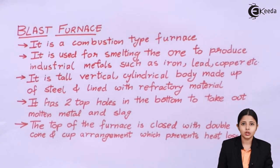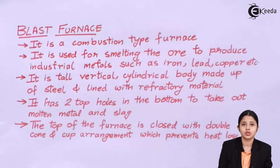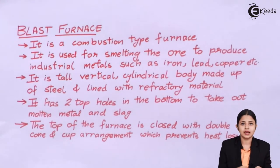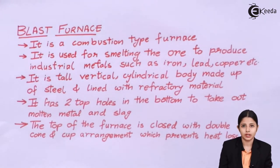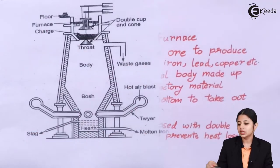It is very important to prevent heat loss from the blast furnace because the heat generated inside is very high and that is needed to melt all the metal in it. Hence, the top of the blast furnace has a double cup and cone arrangement, which helps in the prevention of heat loss.